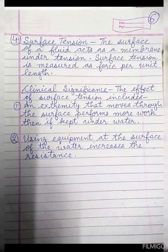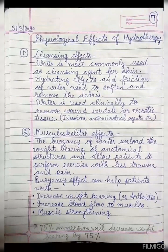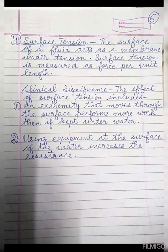The next property is surface tension. The surface of a fluid acts as a membrane under tension, and surface tension is measured as force per unit length. The clinical significance is that an extremity moving through the surface performs more work than if kept underwater, and using equipment at the surface of the water increases the resistance. These are the physical properties of water. We will continue with the hydrotherapy topic covering physiological effects of hydrotherapy in the next video.